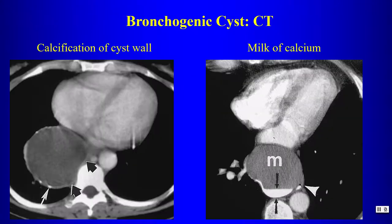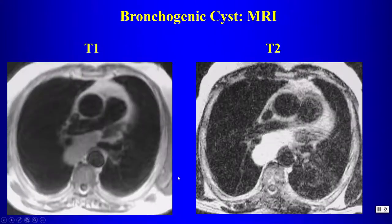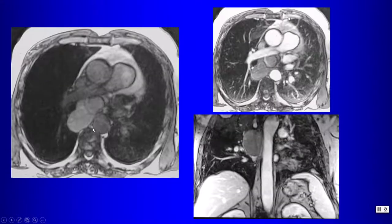Other CT appearances of bronchogenic cysts include calcification in the cyst wall or milk-of-calcium layering. On MRI they can be high signal on T1-weighted imaging due to proteinaceous contents, and very bright on T2-weighted images. On pre- and post-contrast MR there is no enhancement within the lesion.